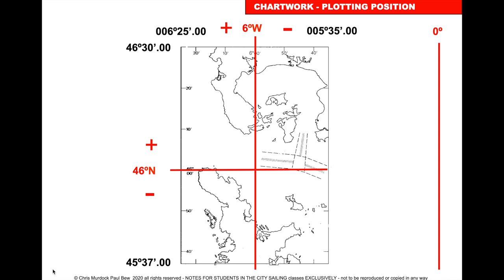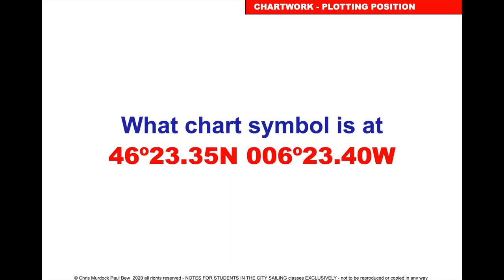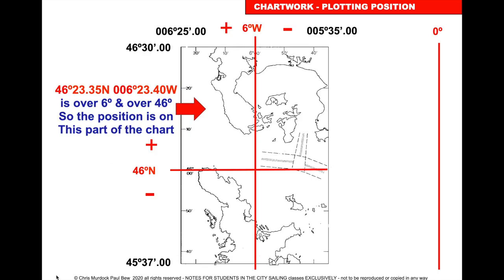If we look at RWA chart 3 — get it out, lay it out flat on the table — you will see in the middle it says 46 degrees north, that is 46 degrees north of the equator, and at the top it says 6 degrees west, which is 6 degrees west from the Prime Meridian or Greenwich Meridian. So we know our target position is north of 46 degrees and west of 6 degrees, placing it in a specific part of the chart.